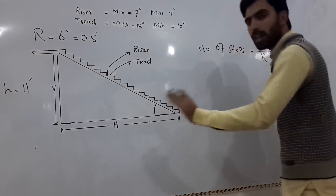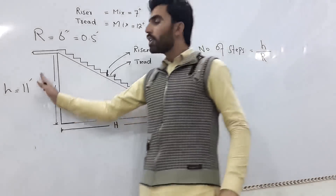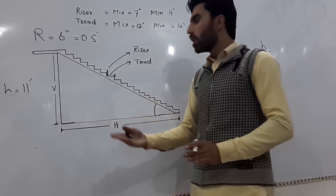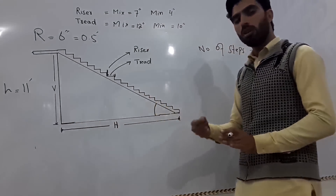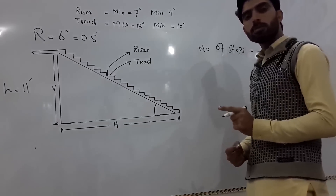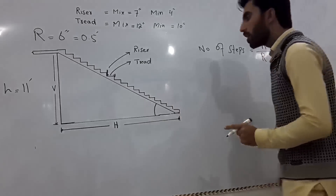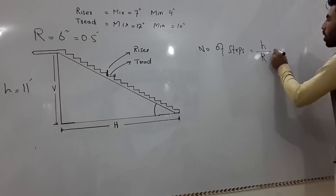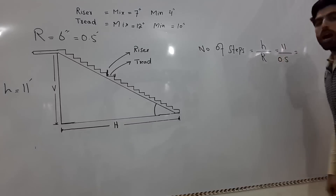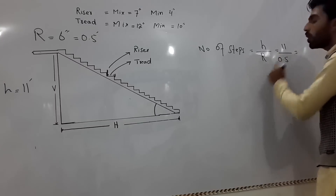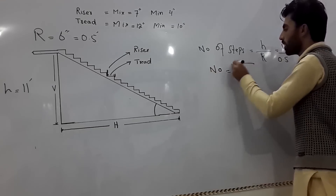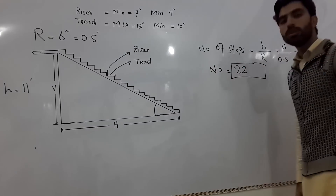So the riser is six inches, equal to 0.5 feet, and the height is 11 feet — though it can be different, like 15 feet, 12 feet, or 5 feet. You can put any values into this formula. So: 11 feet divided by 0.5 feet equals 22 steps. You will need 22 numbers of steps.